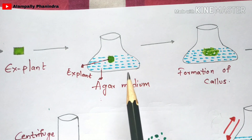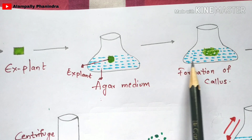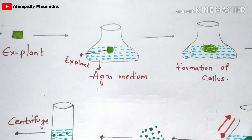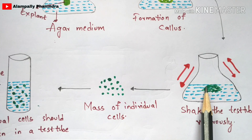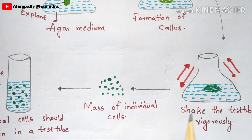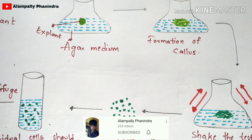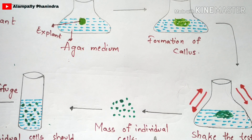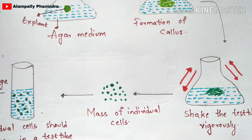In the next step, it will itself form a callus — formation of callus occurs. The callus is formed by rapid cell division with the help of cytokinins present in the agar medium. The agar medium consists not only of agar solution but also other nutrients like cytokinins, plant growth hormones, nitrogen, phosphorus, and many other nutrients. With the help of cytokinins, callus formation is initiated.